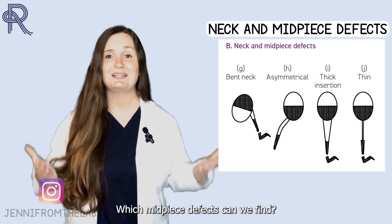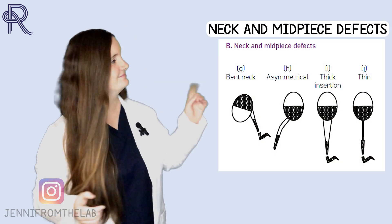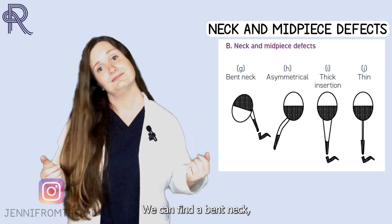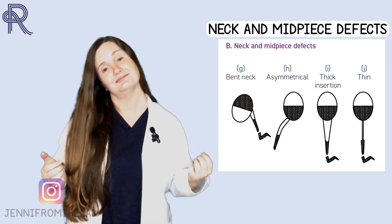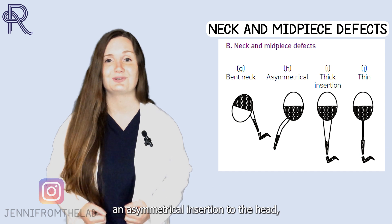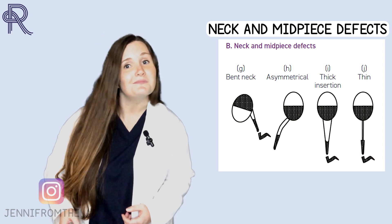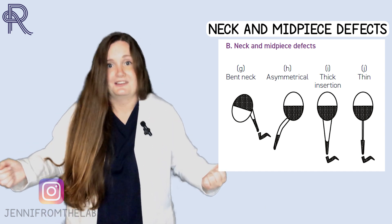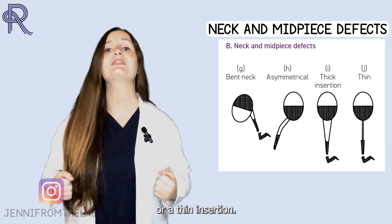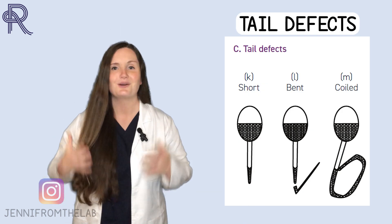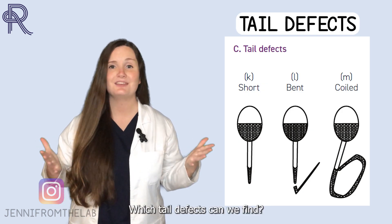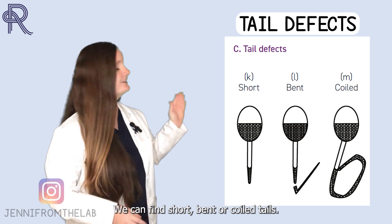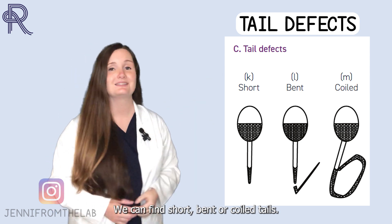Did you know that sperm cells can also have two heads? Which midpiece defects can we find? We can find a bent neck, an asymmetrical insertion to the head, a thick insertion, or a thin insertion. Which tail defects can we find? We can find short, bent, and coiled tails.